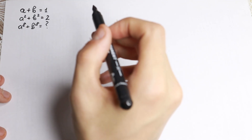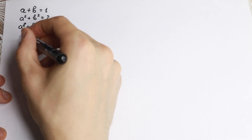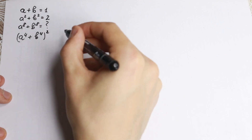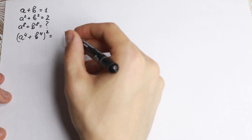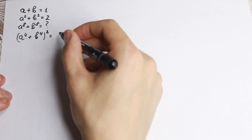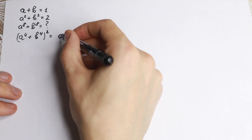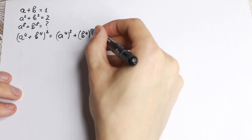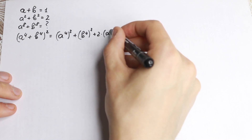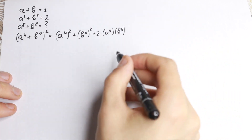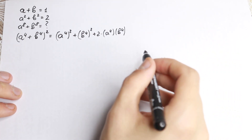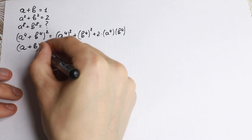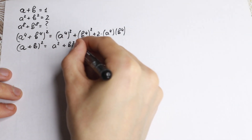First I want to start with this identity. If we have a to the fourth plus b to the fourth and we raise this sum to the square, we can apply the classic formula (a+b)² = a² + b² + 2ab, but here instead of a we have a to the fourth. So we get: a to the fourth squared, plus b to the fourth squared, plus 2 times a to the fourth times b to the fourth.